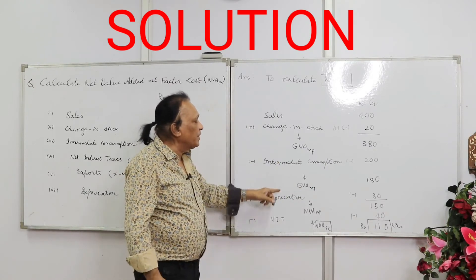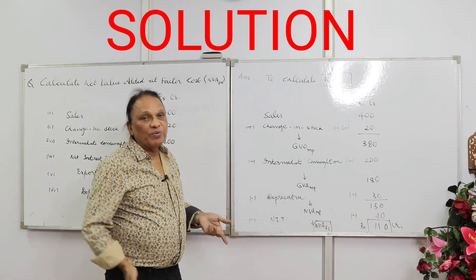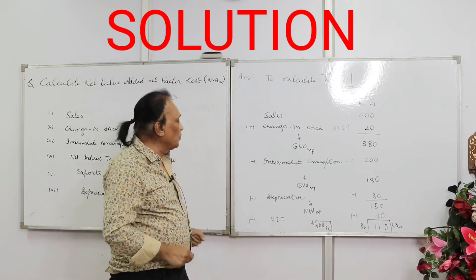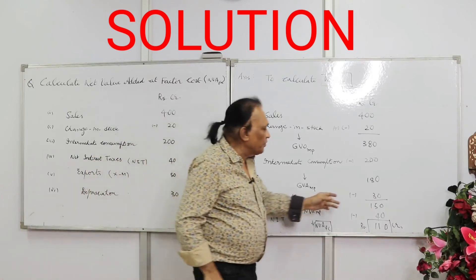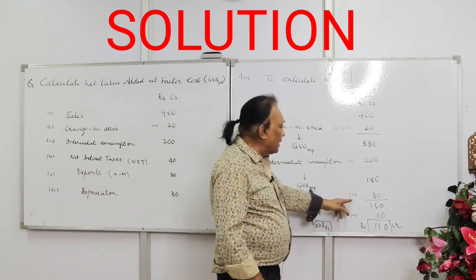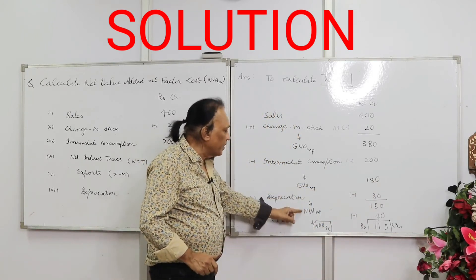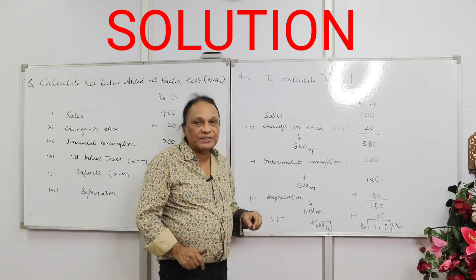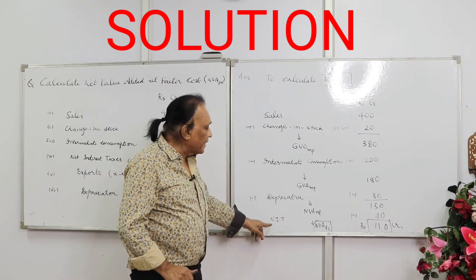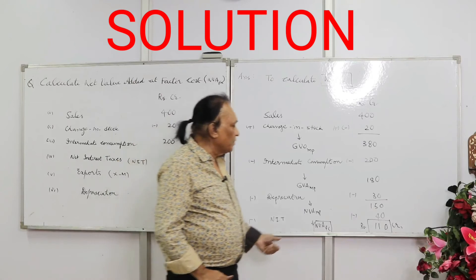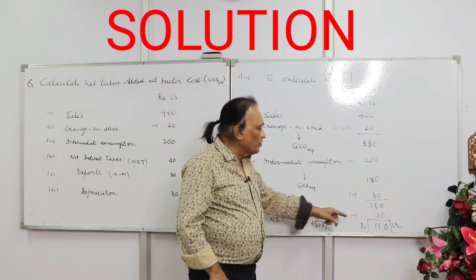When you subtract intermediate consumption from gross value of output, you get gross value added at market price. Step three: from gross we go to net — subtract depreciation (consumption of fixed capital) of 30. So 180 minus 30 = 150, which is net value added at market price. Step four: subtract net indirect taxes of 40. So 150 minus 40 = 110. That is net value added at factor cost — your final answer.